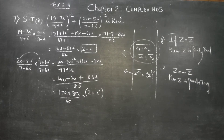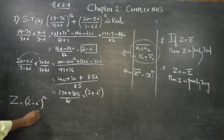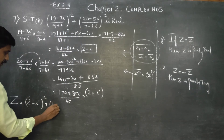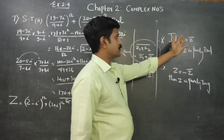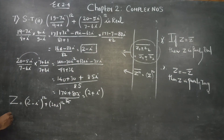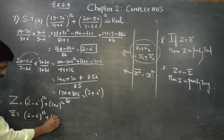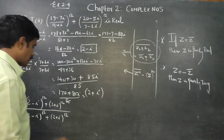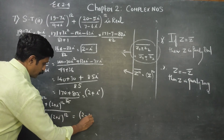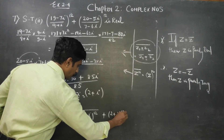Now let Z equal (2 - i)^12 plus (2 + i)^12. To prove Z is purely real, I check if Z equals Z-conjugate. Computing Z-conjugate: the conjugate of (2 - i)^12 plus (2 + i)^12 equals (2 - i)^12 conjugate plus (2 + i)^12 conjugate, by the sum conjugate rule.